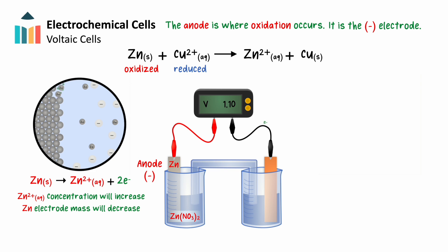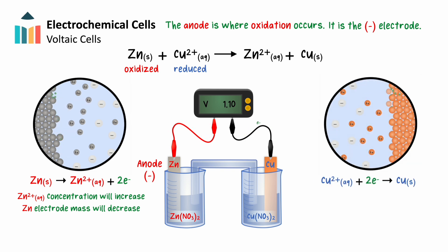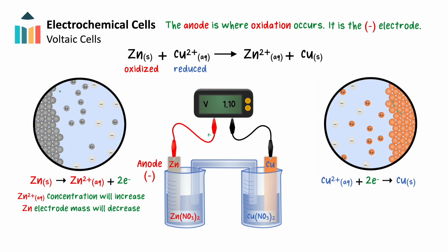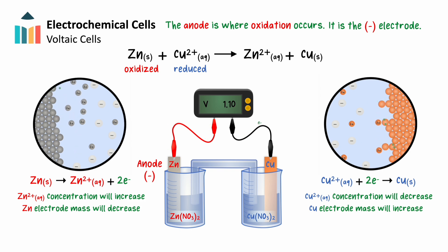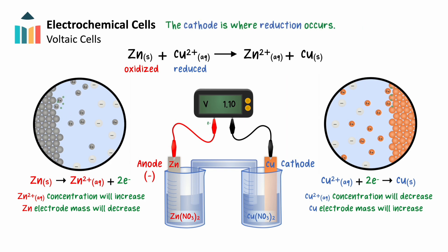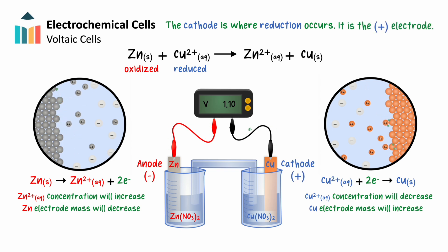Electrons will travel from the zinc anode through the wire and to the copper electrode, which is immersed in a copper salt solution — for this example, a copper(II) nitrate solution. The half-equation for the reduction of copper shows that electrons entering the copper electrode attract positive Cu²⁺ ions. Each copper ion will gain two electrons and be reduced to copper metal. Over time, the concentration of Cu²⁺ ions in solution decreases, and the mass of the copper electrode increases with the addition of newly plated copper. The electrode at which reduction occurs is the cathode — reduction will always occur at the cathode. Since the cathode is the receiving end of electron flow, it is identified as the positive electrode.